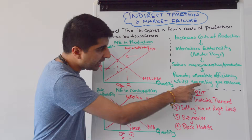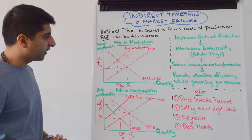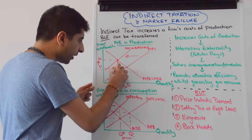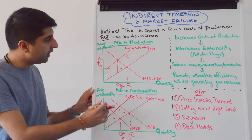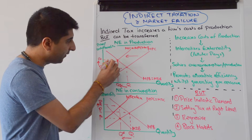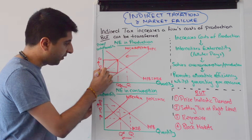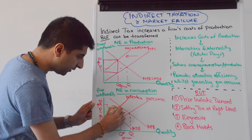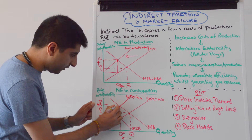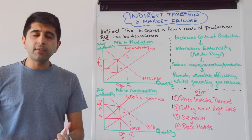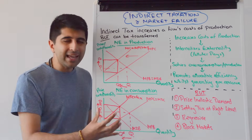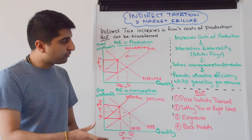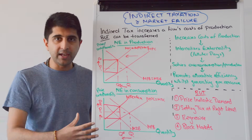Don't forget that an indirect tax also generates government revenue. Remember how we get the government revenue: go to the new equilibrium, the vertical distance between the two MPC curves is the value of the tax multiplied by the quantity being sold, and we get this box. So that box is the value of government revenue. When you talk about the government revenue, talk about it in terms of where it can be used again to further solve the market failure. You can use the phrase: this tax is a hypothecated tax — i.e. the revenue is ring-fenced to further solve market failure.